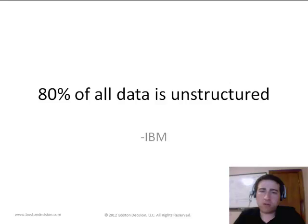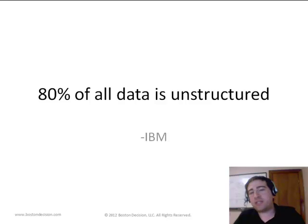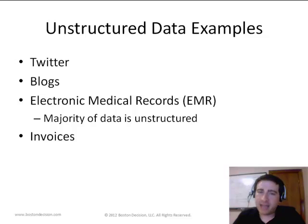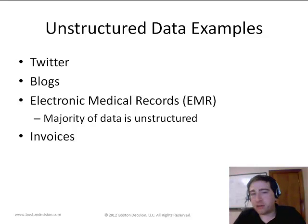80% of all global data is unstructured, according to an IBM report from 2010. Unstructured data consists of information that doesn't fit neatly into rows and columns of a spreadsheet or table. For example, this could be unstructured text data, audio, video, and the like. Some examples of text-based unstructured data could be Twitter streams, blogs on a website, electronic medical records, invoices, and the list continues.